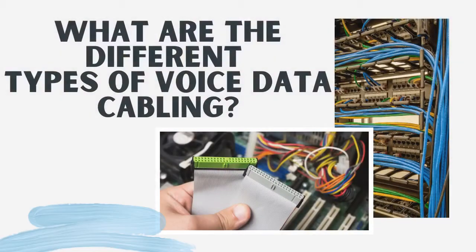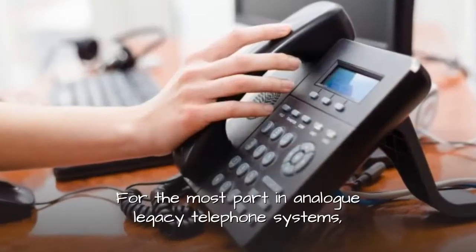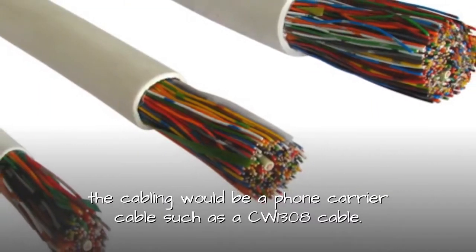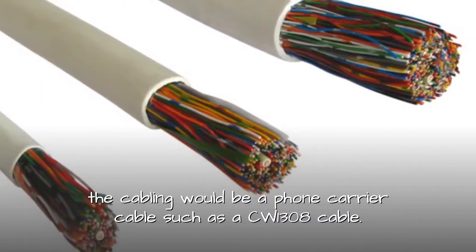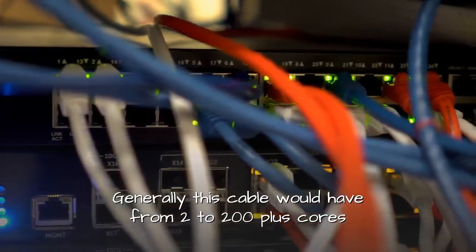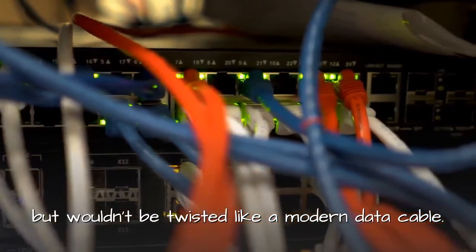What are the different types of voice data cabling? For the most part in analog legacy telephone systems, the cabling would be a phone carrier cable such as a CW1308 cable. Generally this cable would have from 2 to 200 plus cores but wouldn't be twisted like a modern data cable.